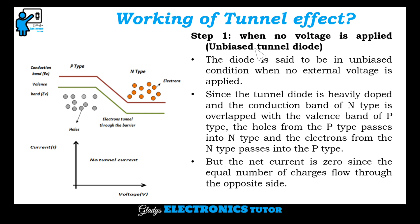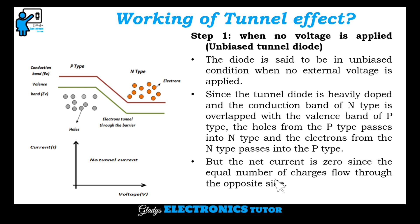Step 1 is when no voltage is applied — the unbiased tunnel diode. The diode is in unbiased condition when no external voltage is applied. Since the tunnel diode is heavily doped and the conduction band of N type overlaps with the valence band of P type, the holes from P type pass into N type and the electrons from N type pass into P type. But the net current is zero since equal numbers of charges flow in opposite directions.